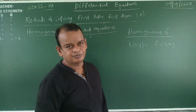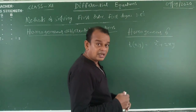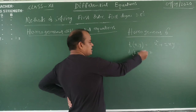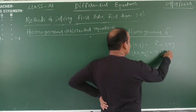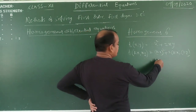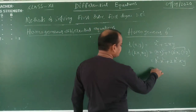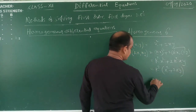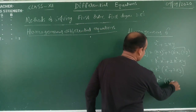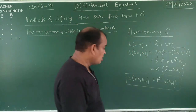Is it a homogeneous function or not? Whenever we check if the function is homogeneous, replace x by kx and y by ky. Substituting: (kx)² + 2(kx)(ky) = k²x² + 2k²xy = k²(x² + 2xy). So f(kx, ky) = k² · f(x, y). This is called a homogeneous function of degree 2.